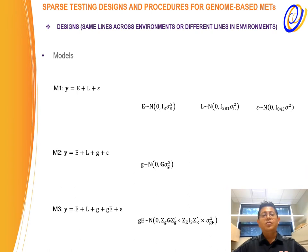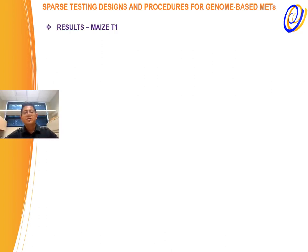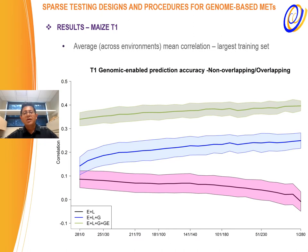Regarding the models used for conducting the predictions, we have three. Model one includes only the main effect of environments and lines. Model two considers the main effect of the markers via the kinship matrix. And model three also considers the genotype-by-environment interaction via the product between covariance structures. Results are shown in black for the main effects model, in blue for the model including marker main effects, and in orange for the model including the G×E interaction.